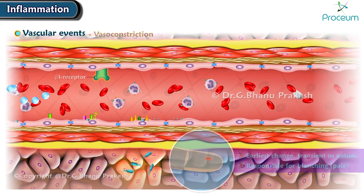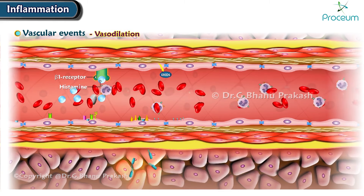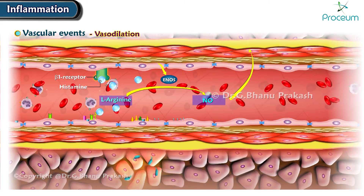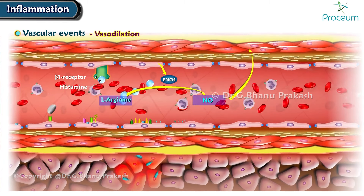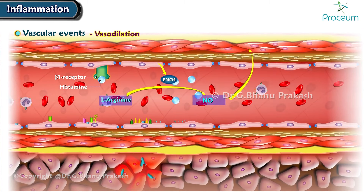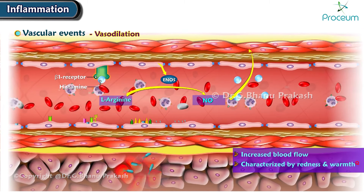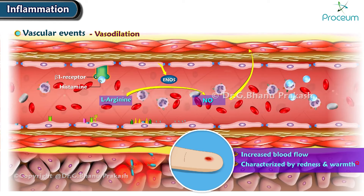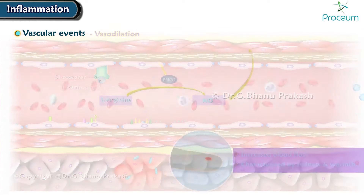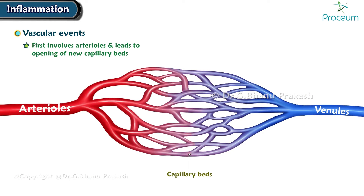Next, there's vasodilation, caused by nitric oxide and notably histamine. Alterations in the vascular caliber lead to increased blood flow, characterized by redness and warmth. Vasodilation first involves the arterioles and then leads to the opening of new capillary beds.